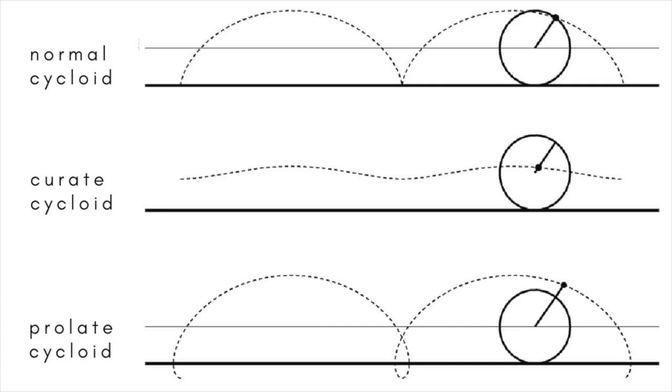A prolate cycloid is traced out, for example, by points on the flange of the wheels of a locomotive, which extends below the top of the tracks.